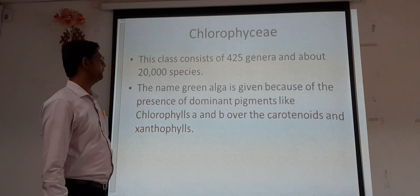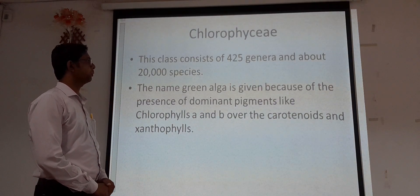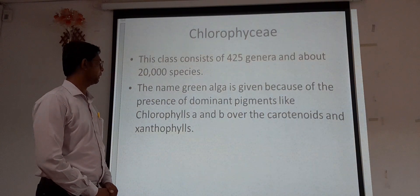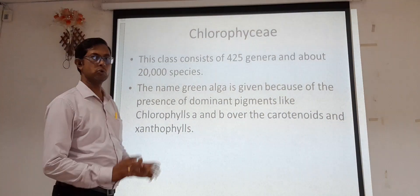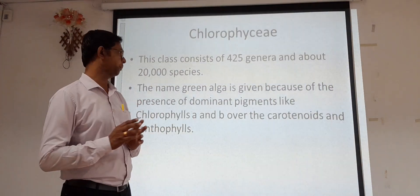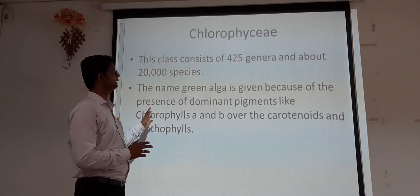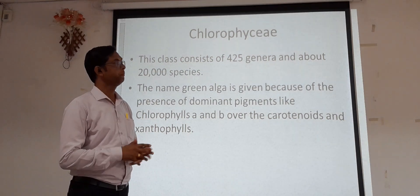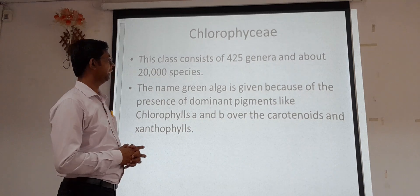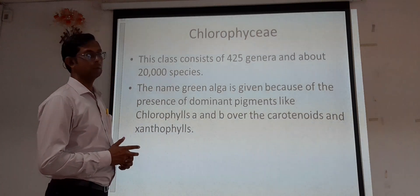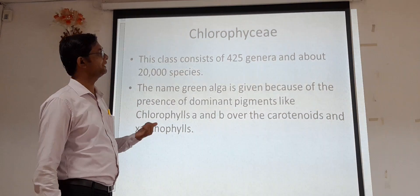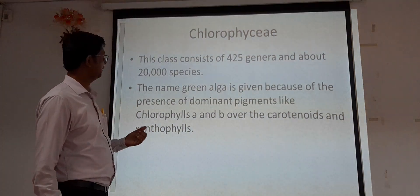The name green algae is given because of the presence of dominant pigments like chlorophyll A and B over the carotenoids and xanthophylls. Chlorophyll A and chlorophyll B are the two pigments prominently present in Chlorophyceae, which is why they are green in color and also known as green algae.